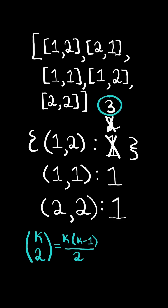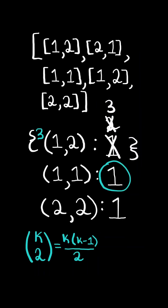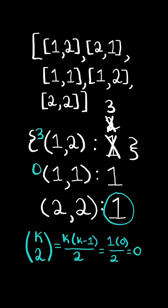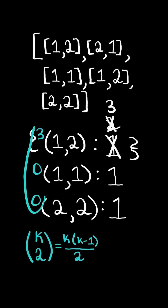For example, the domino (1, 2) appears three times, and using the formula, we can create a total of three pairs — three equivalent pairs with the domino (1, 2). We continue to the next value in the dictionary. Using the formula for the domino (1, 1), we can create zero pairs, and similarly for the domino (2, 2), we create zero pairs. Adding all these numbers up, we can create a total of three equivalent domino pairs.